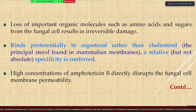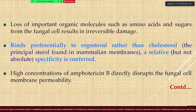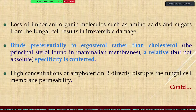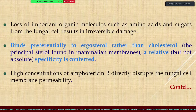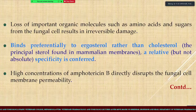Amphotericin B binds preferentially to the principal sterol ergosterol in fungal membranes. Cholesterol is the molecule in mammalian membranes - the selectivity is relative but not absolute. At high concentration, Amphotericin B directly disrupts the fungal cell membrane permeability by hampering the potassium-hydrogen pump, altering membrane permeability.